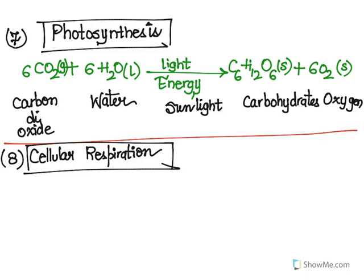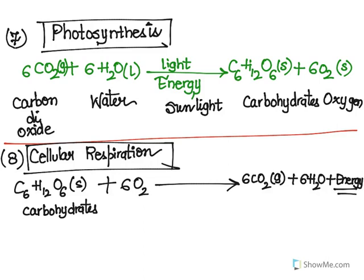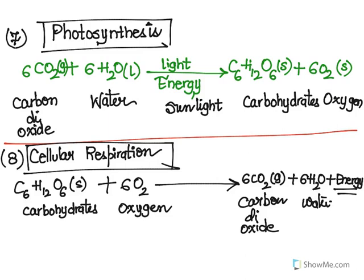Now we take a look at cellular respiration in organisms. The equation involves C6H12O6 in solid form — your carbohydrates — plus oxygen. It is actually the opposite of photosynthesis, and it gives us carbon dioxide and water, with a lot of energy being released. This energy is used to accomplish different tasks. You can see that energy is used in photosynthesis, whereas energy is released as part of cellular respiration.